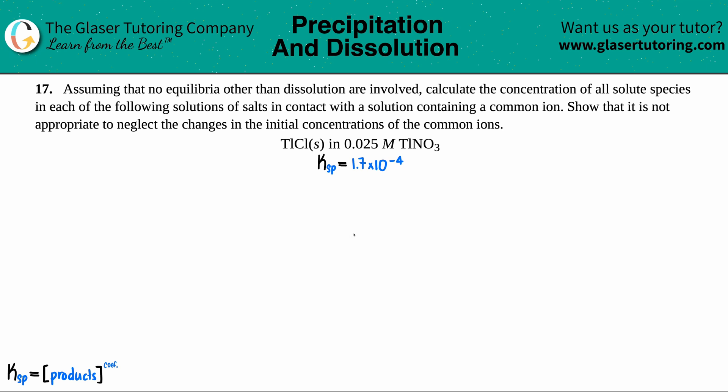Problem 17: Assuming that no equilibria other than dissolution are involved, calculate the concentration of all solute species in each of the following solutions of salts in contact with a solution containing a common ion. Show that it is not appropriate to neglect the changes in the initial concentration of the common ions.